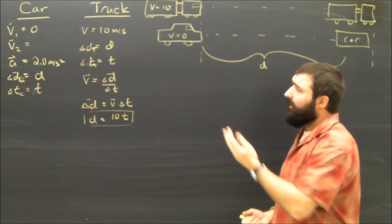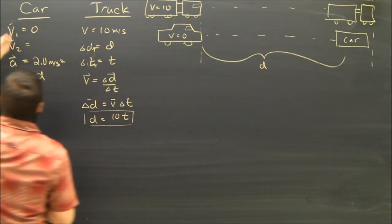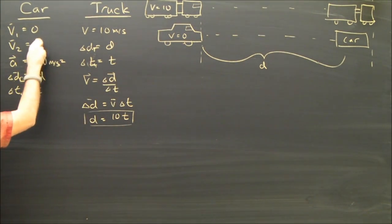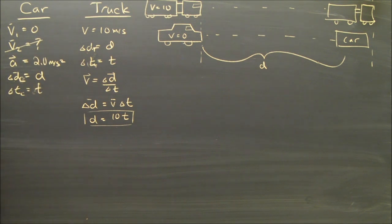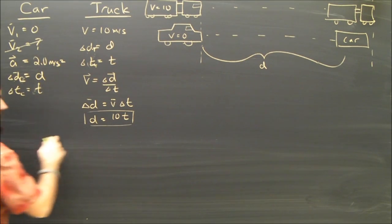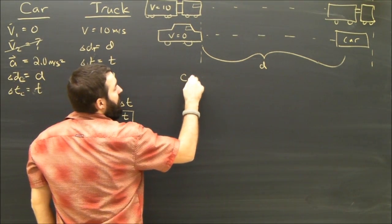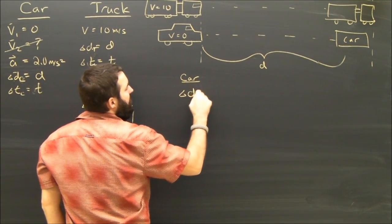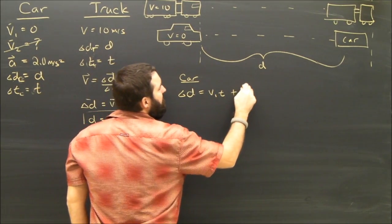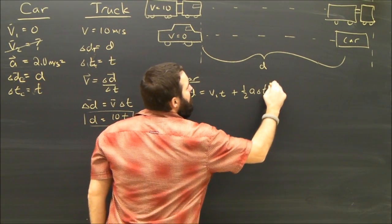What about the car now? Looking at the car as given. The only thing that I don't know anything about for the car is V2. So clearly I have to use equation number three. I'm going to write it over here though, for the car. Now, equation number three, D equals V1 T plus 1 half A T squared.